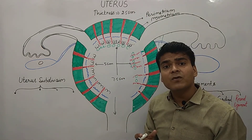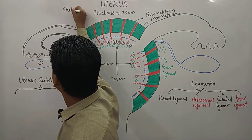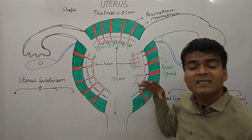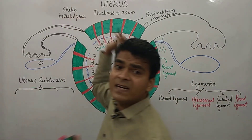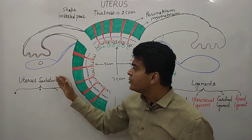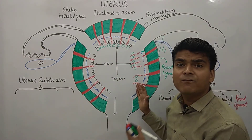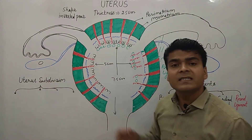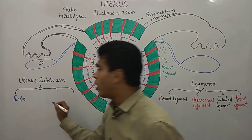This is the size of the uterus. If we see the shape of the whole structure, it is an inverted pear shape. Now discussing the subdivisions of the uterus — if we look at the outer structure, the uterus is divided into four subdivisions: the first is the fundus, second is the body, third is the isthmus, and fourth is the cervix.